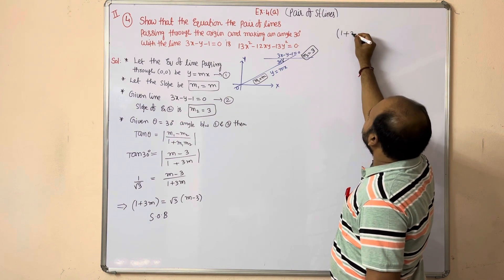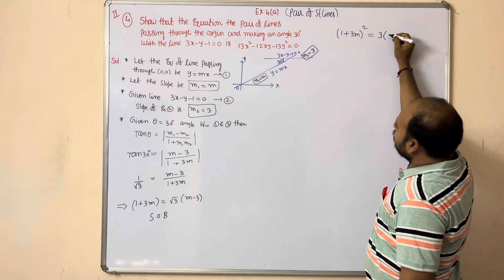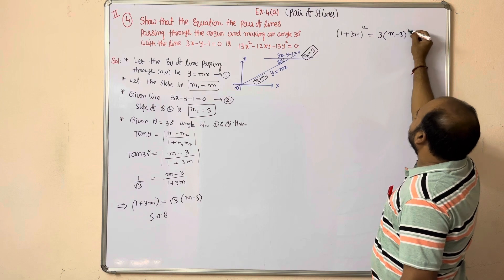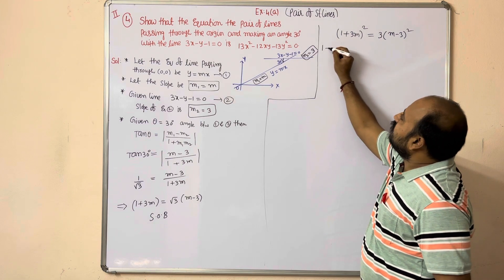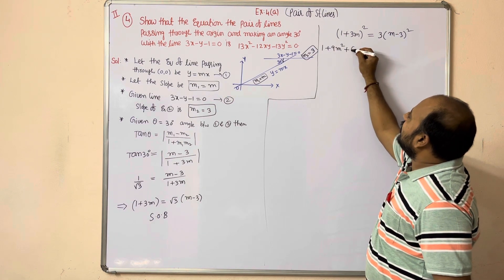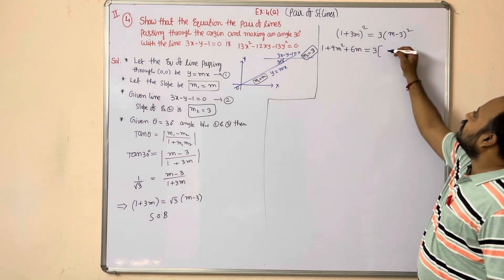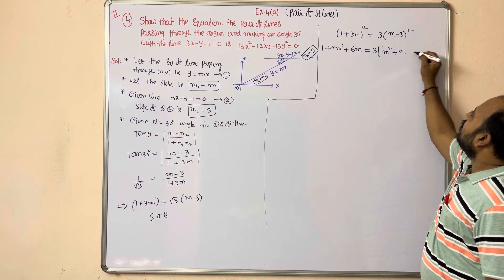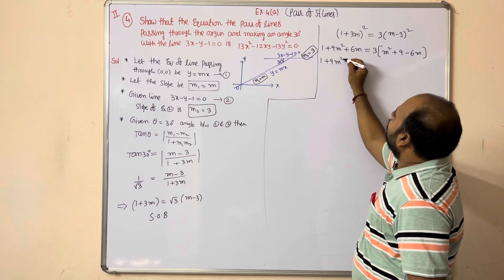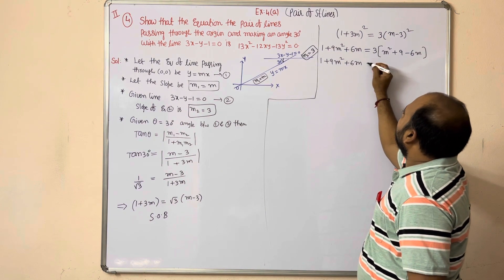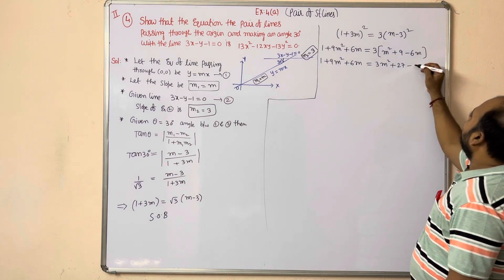Expanding the left side: 1 plus 9m square plus 6m. Expanding the right side: 3 into (m square plus 9 minus 6m). So we get: 1 plus 9m square plus 6m equal to 3m square plus 27 minus 18m.